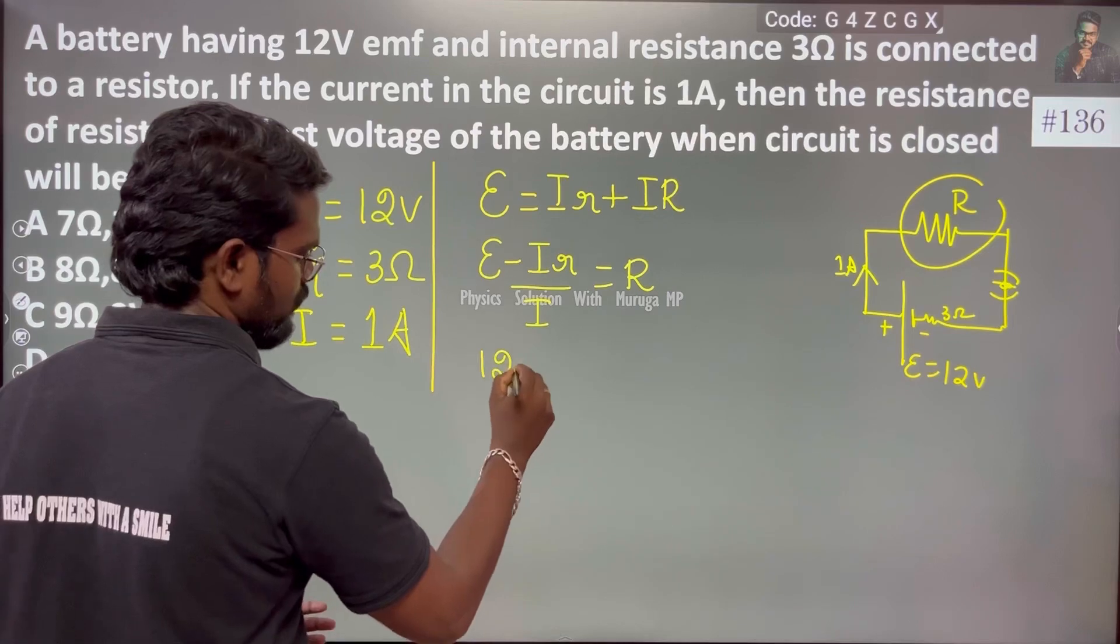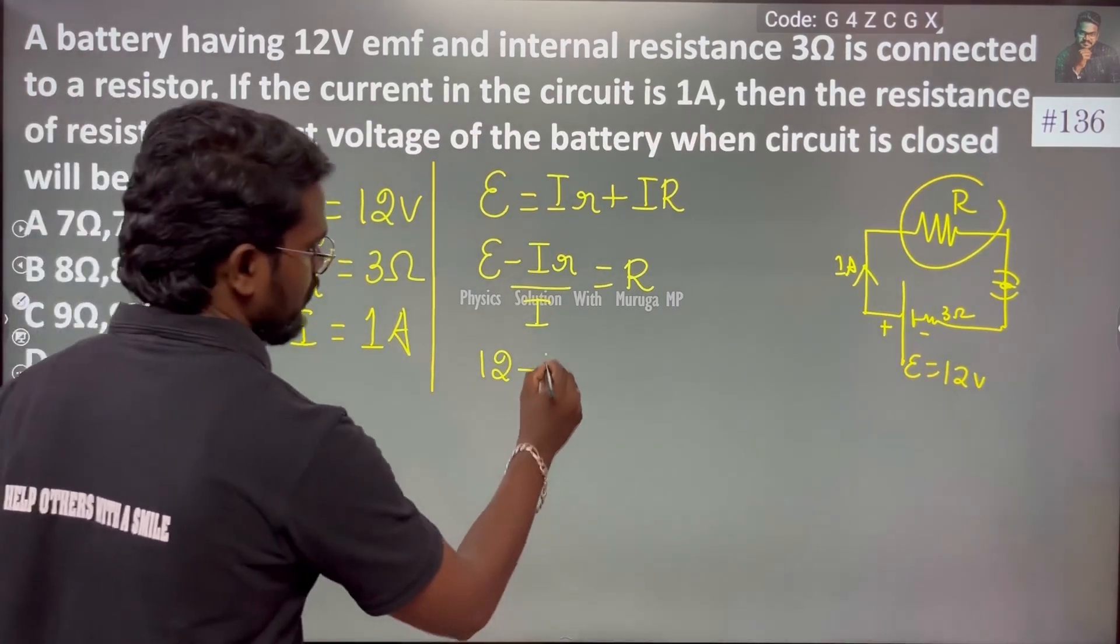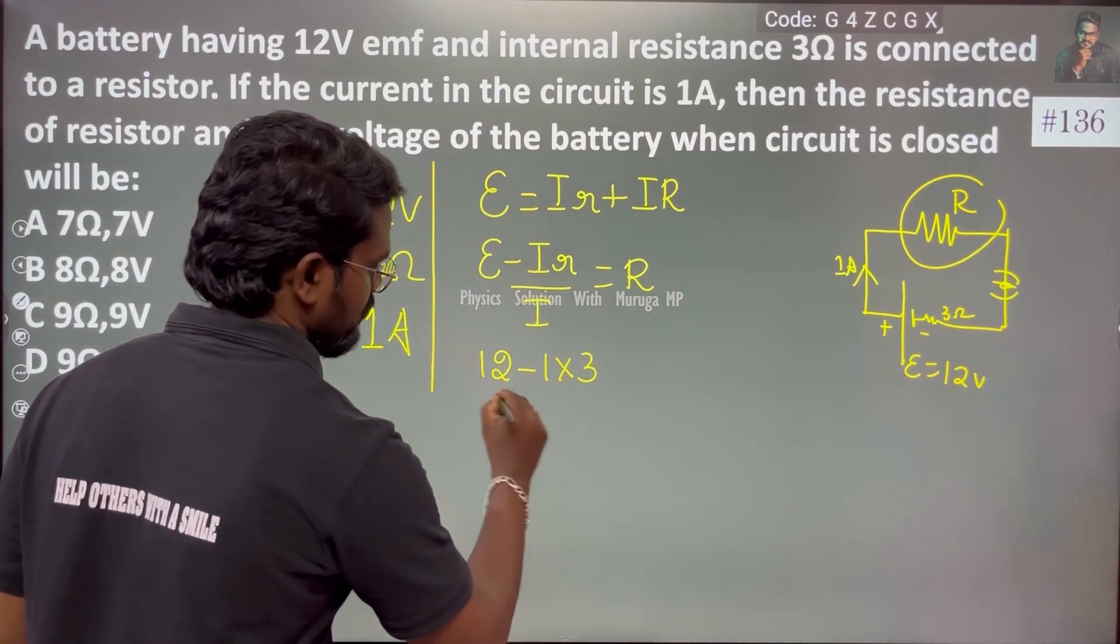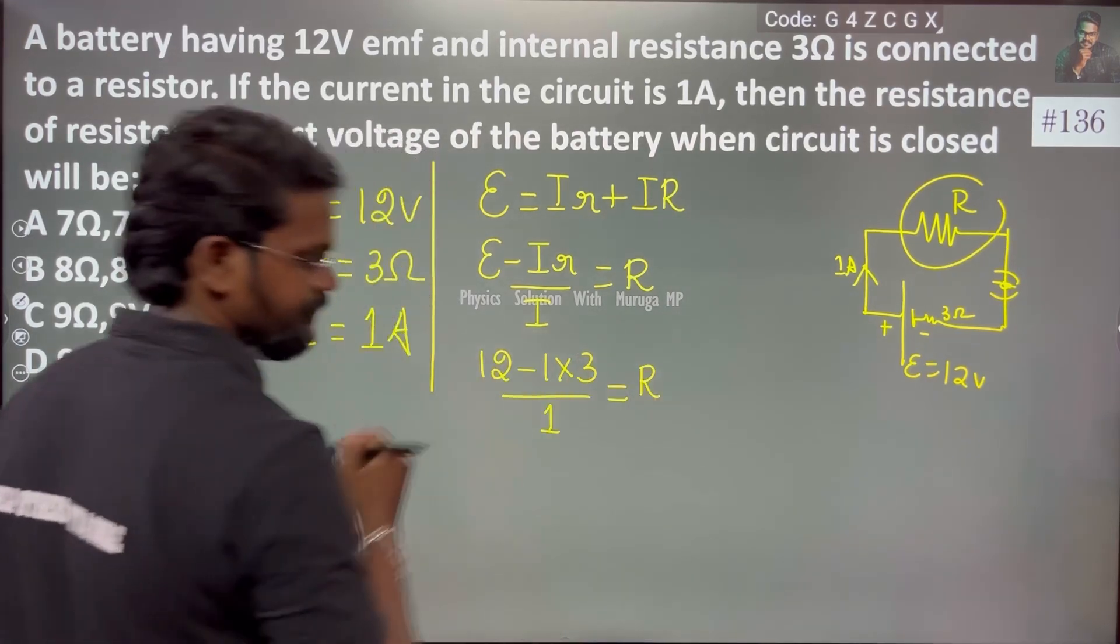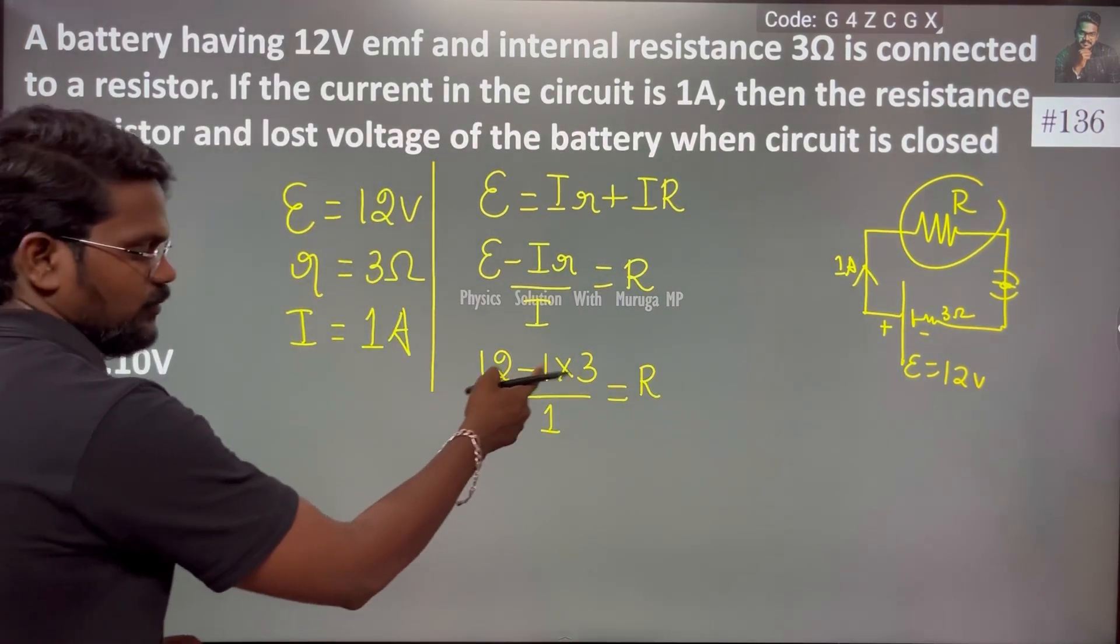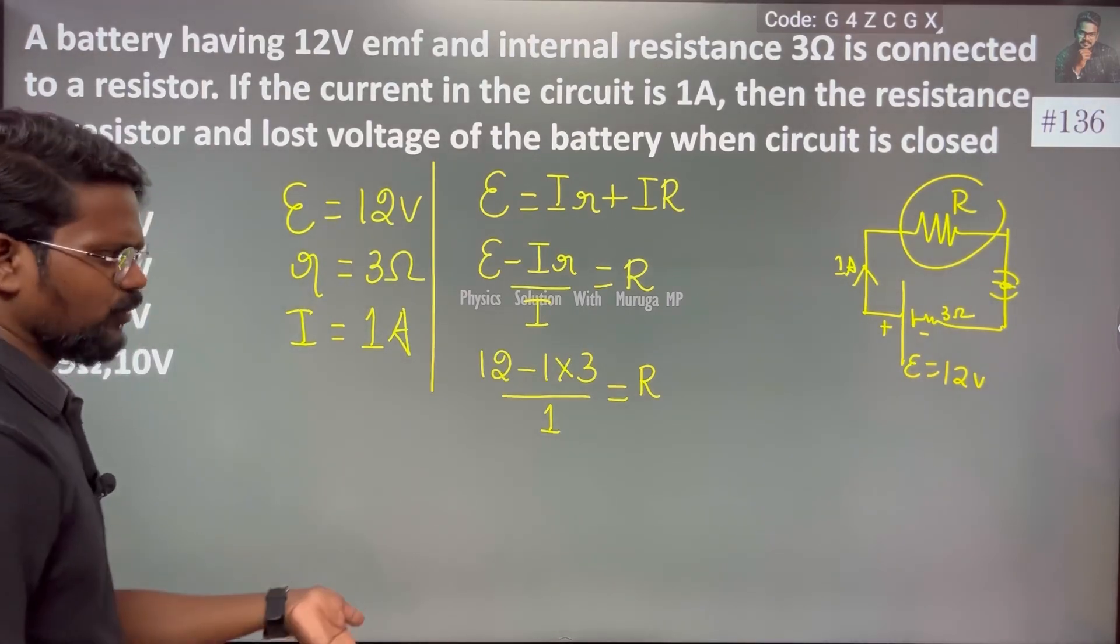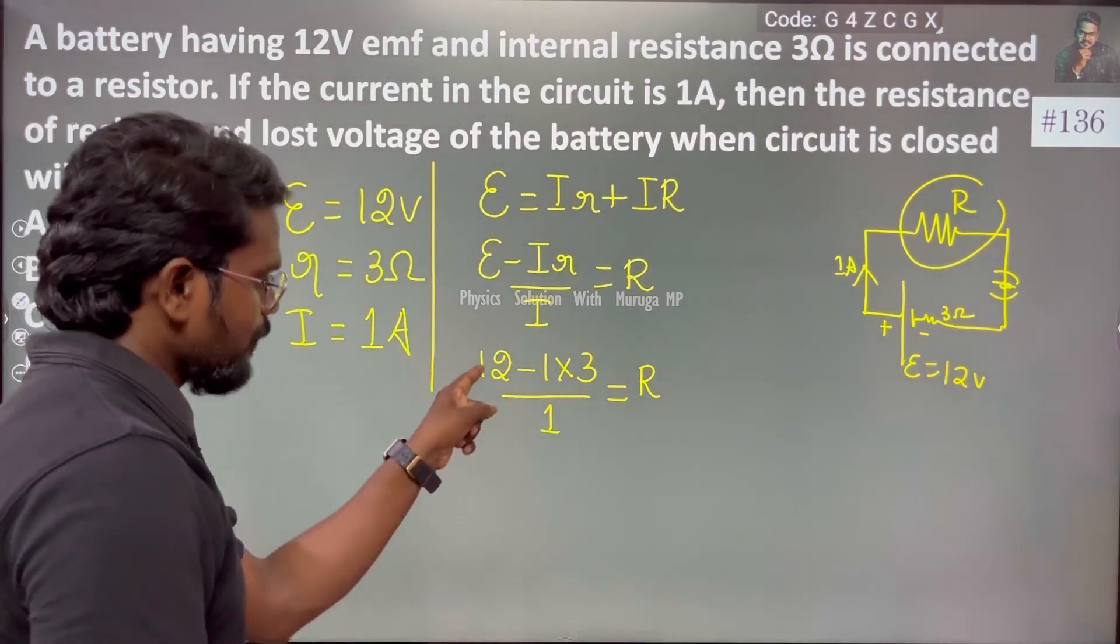Just substitute: EMF is 12, current is 1, so 12 = 1 into R plus 1 into internal resistance 3, which gives R = 12 minus 3.